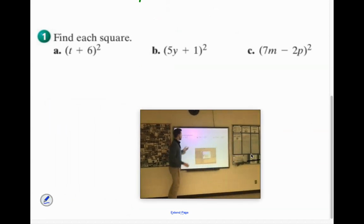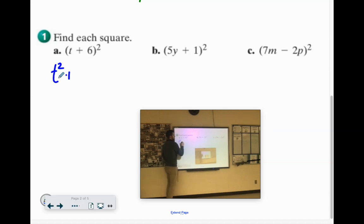T plus 6. Square the first term. T squared. The middle term, you multiply them together. 6 times T is 6T. Times 2 would be 12T. And then you square the last term. 6 times 6 is 36.